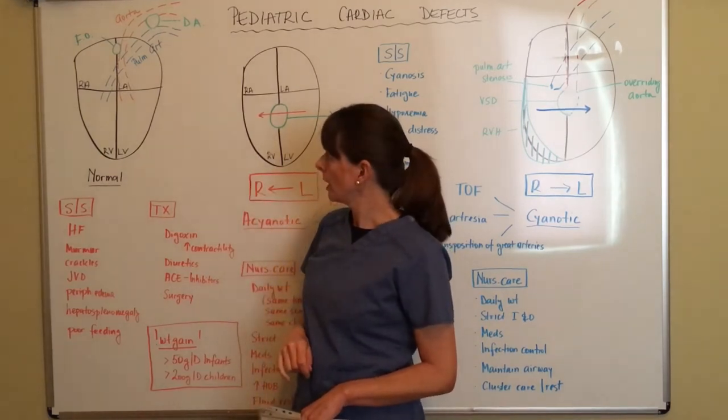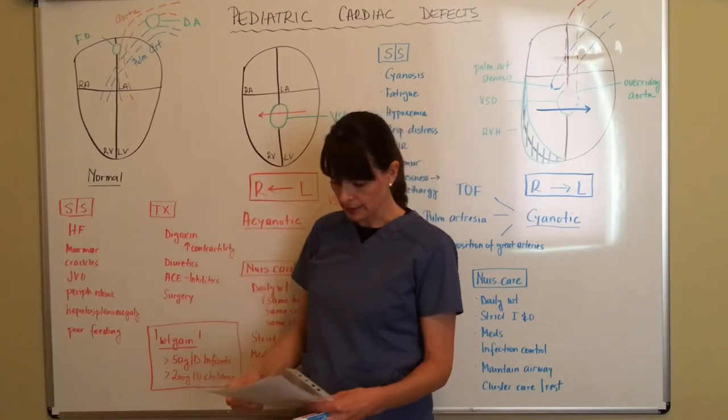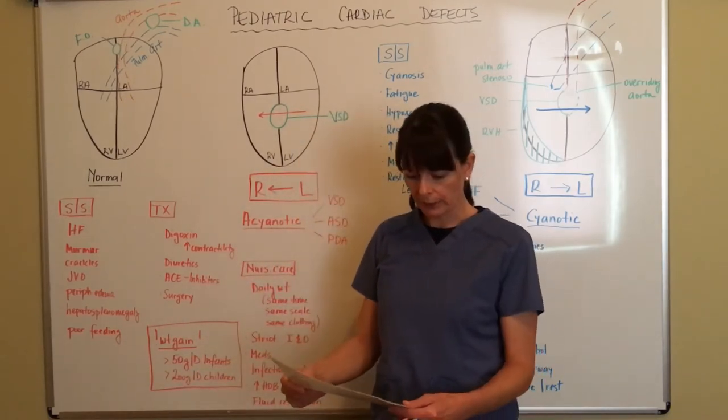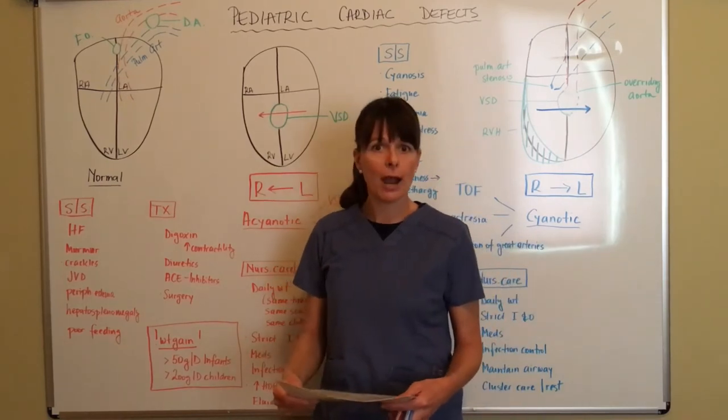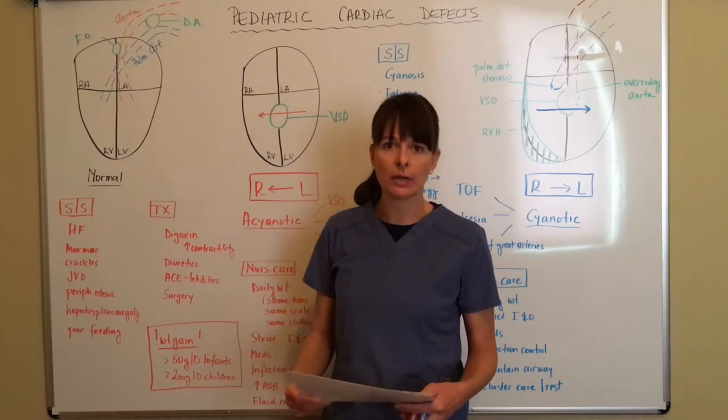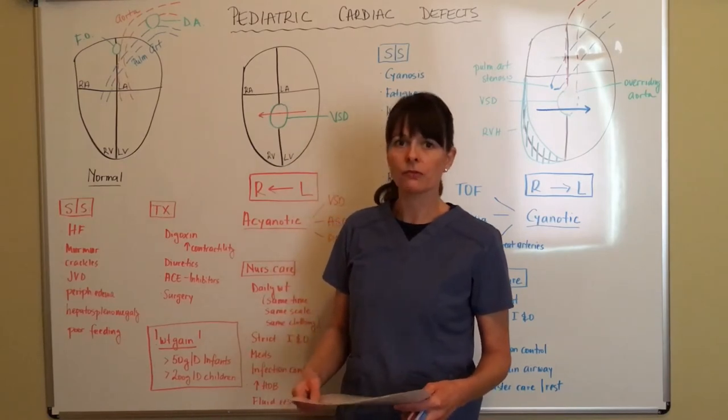The foramen ovale and ductus arteriosus both close after birth. Typically, the foramen ovale closes about one to two hours after birth and the ductus arteriosus about 15 to 18 hours after birth. So fairly quickly.